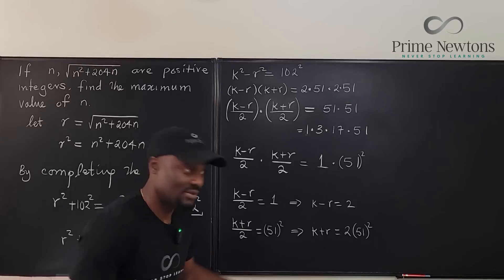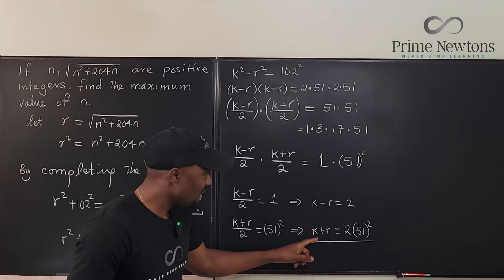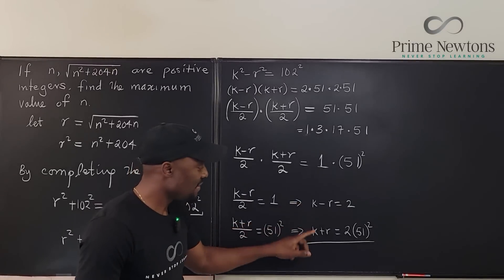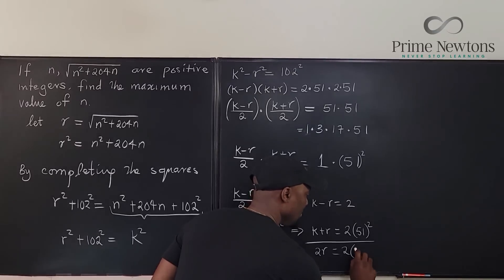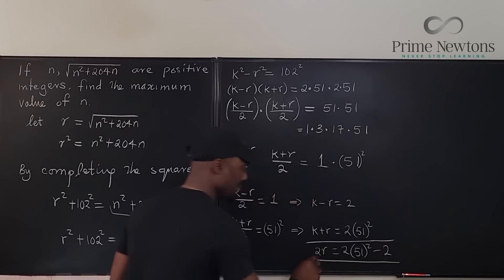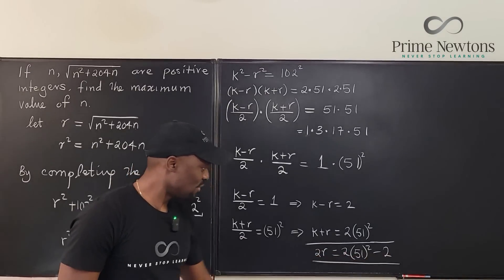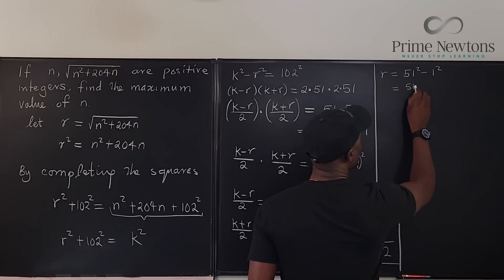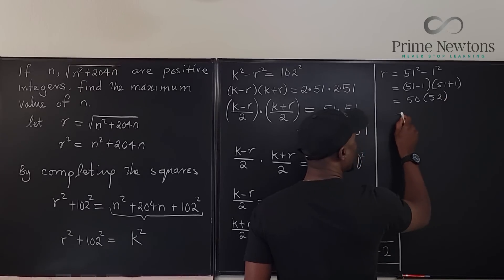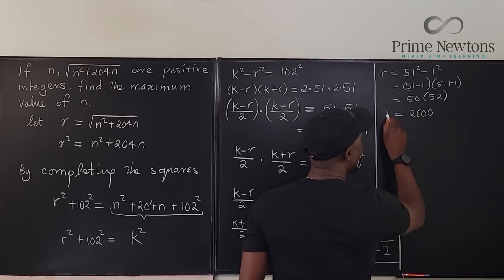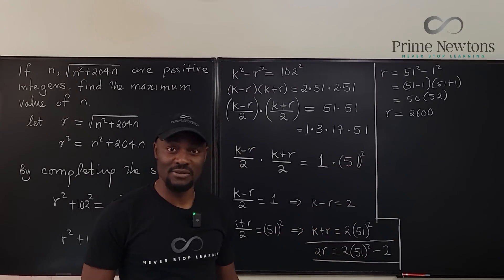Now I can solve a system of equations. Remember, I'm interested in r, not in k. So I'm not going to solve for k. What I'm going to do is subtract the first equation from the second one. So this minus this is going to give me 2r. And then this minus this is going to give me 2 times 51 squared minus 2. When you solve this equation, divide everything by two. You end up with, which is the same thing as 51 minus 1 times 51 plus 1, and that gives me 50 times 52, which is 2600. So r is 2600, and we're almost home.